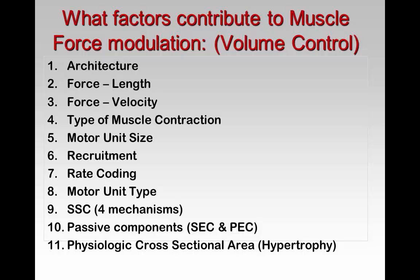In terms of contraction type: we are the weakest in concentric contractions, followed by isometric, followed by eccentric. Then there's motor unit size — how big a motor unit is affects force production. The question is: can you train motor unit size?